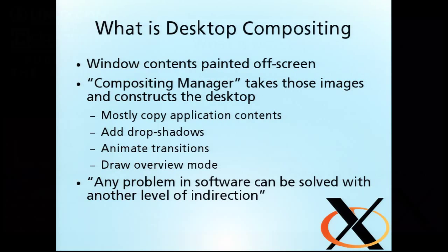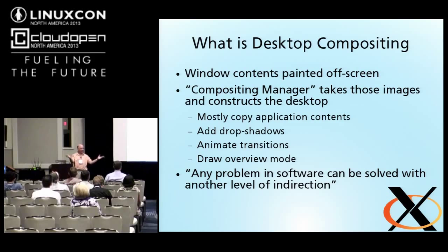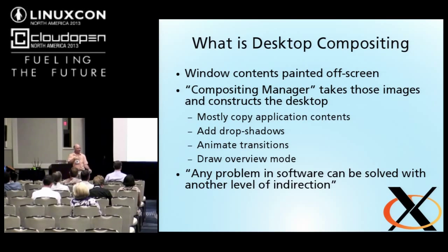A brief overview of compositing. What is desktop compositing? It's what all modern Windows systems do. The applications paint stuff into an off-screen buffer and then you have an overarching compositing manager or a Windows system that takes all these off-screen application images — your spreadsheet, your presentation, your 47 different clocks — and merges them all together into a pretty view on the screen with translucency and drop shadows.